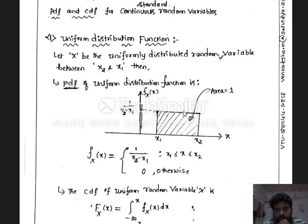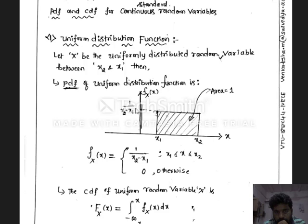We should note that the area of the PDF curve is always 1. The width of this uniform distribution function from x1 to x2 is (x2 minus x1), and the height is 1 divided by (x2 minus x1). If I find the area, then the area of this rectangle will be (x2 minus x1) multiplied by 1 divided by (x2 minus x1), giving a total area of 1.